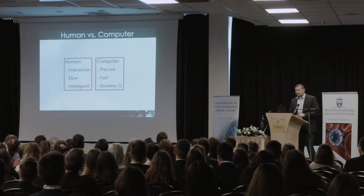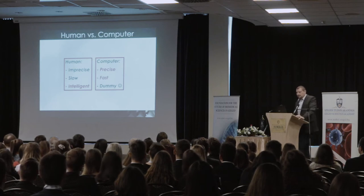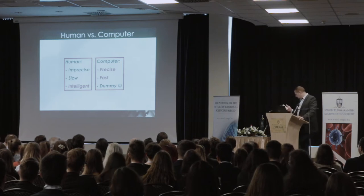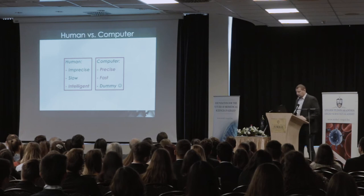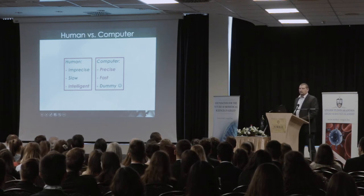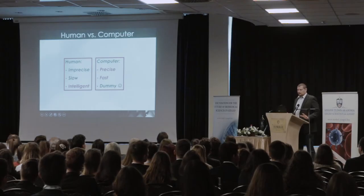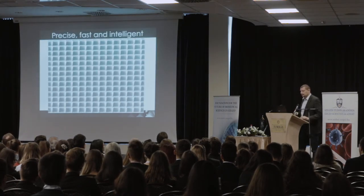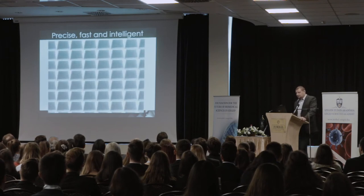So what I wanted to highlight is: a human is imprecise and slow, but intelligent. We cannot measure the size of a box precisely and we are slow at counting, but you could see the horses — my computer would have a very difficult time doing that. The computer is precise and fast, and my research group tries to combine these: being precise, fast, and intelligent.